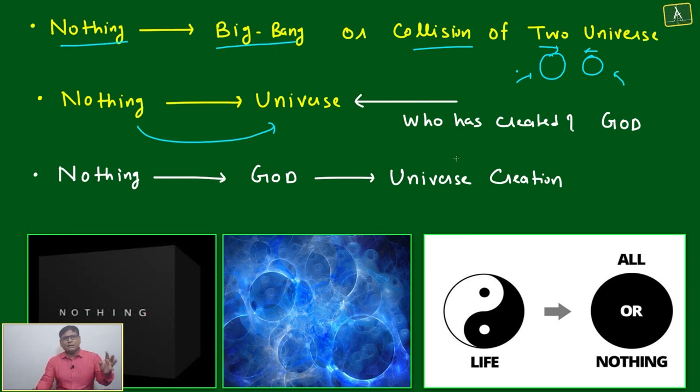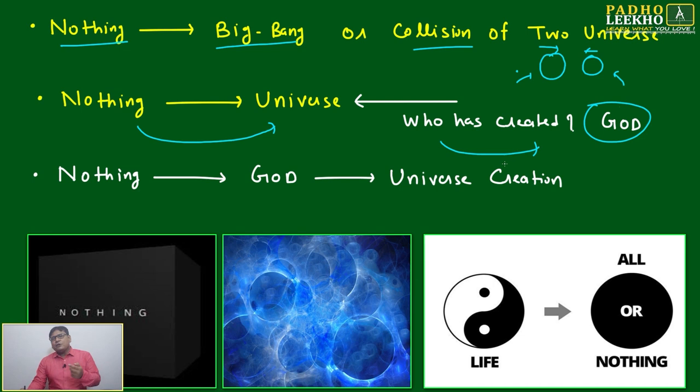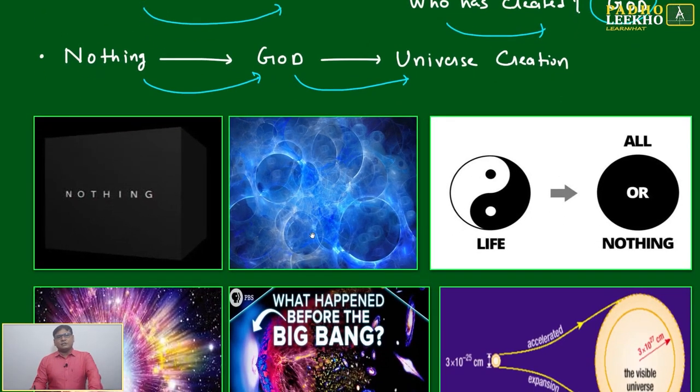Then, nothing to universe - from nothing, the universe has come, we will accept it. Then here one simple question: who has created it? If we don't know anything, we will just put one unknown thing, unknown power - that is called God. Either you are telling Brahma, or Shiva, or Jehovah, or Isa, or Allah. Anyway, this is God. Between nothing and universe, God has entered - the hero has entered.